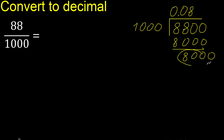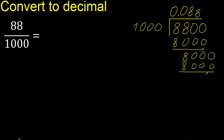8000. 1000 multiplied by which number? Multiplied by 8 is 8000. Subtract: 0. Therefore, finish.